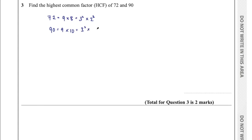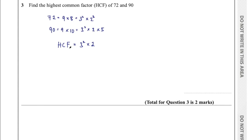9 is 3 squared, and 10 is 2 multiplied by 5. Now to get the highest common factor we take the prime factors common to both numbers. Both numbers have 3 squared, and both have at least one 2 — there's 2 cubed in 72 but only one 2 in 90, so the HCF gets just one 2. There's no 5 in 72. So HCF is 3 squared times 2, which is 9 times 2 equals 18. That was question 3 for 2 marks.